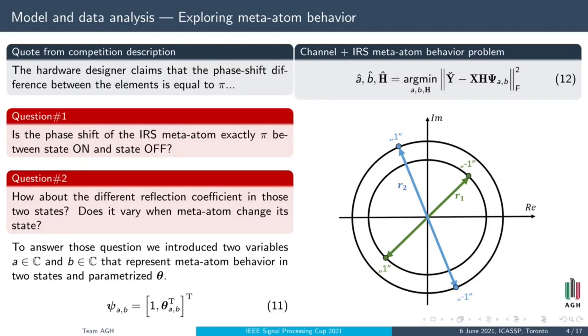So what did we find out from the first dataset? We've checked whether phase shift between two IRS states is really pi and whether attenuations are the same. We did it by running gradient minimization of problem 12, assuming phase shifts and attenuations of states represented as 1 and minus 1 are unknown. Every time we got the result that phase shift is pi and attenuations are the same. So without loss of generality, we can assume that there is no attenuation and 1 means 0 degrees phase shift and minus 1 means 180 degrees phase shift.